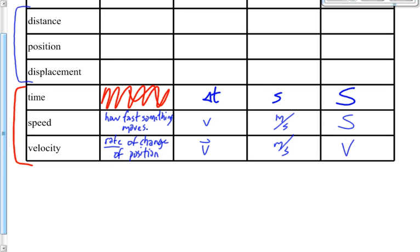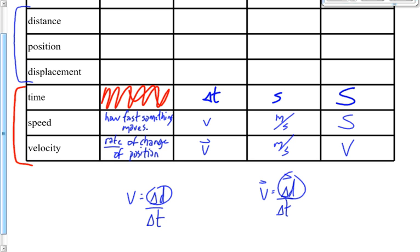There's an equation for speed and velocity. Speed equals distance over time; velocity equals displacement over time. They look virtually identical, except one involves distance and the other involves displacement. If running around the track, the distance is 400 meters but displacement is zero.